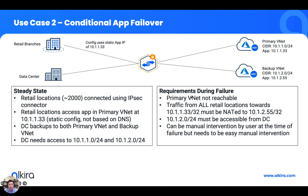Here's a second use case we heard from a customer that was really interesting. They have a couple of data centers and a large number of retail branches utilizing an application in two Azure VNets with subnets of 10.1.1.0/24 and 10.1.2.0/24. The retail branches access an application in the primary VNet at IP address 10.1.1.33, which is statically configured. The data centers still need access to both VNets. During failure — when the primary VNet is not reachable — traffic from all retail locations towards 10.1.1.33 must be NATed to the application IP in the backup VNet. This can be automated using Elkira's APIs to enable the NAT policy when the primary VNet is not reachable.